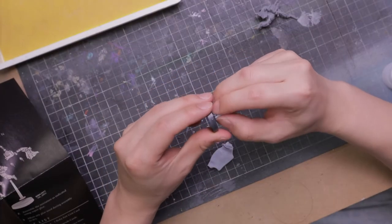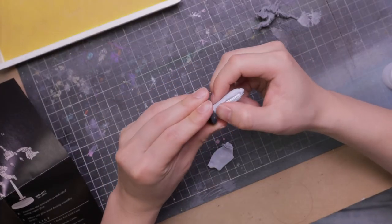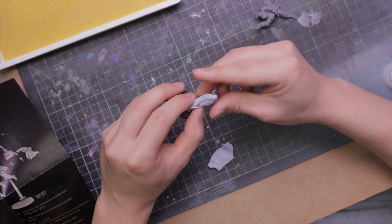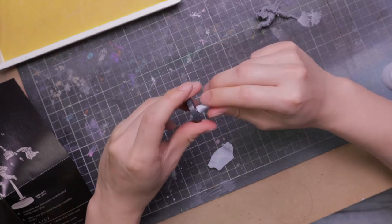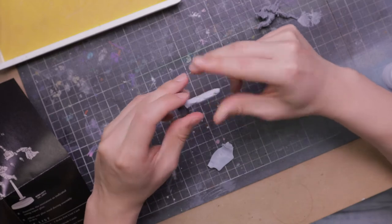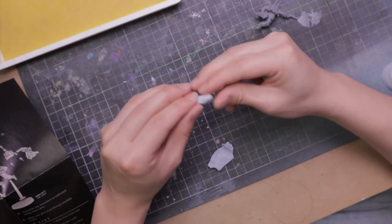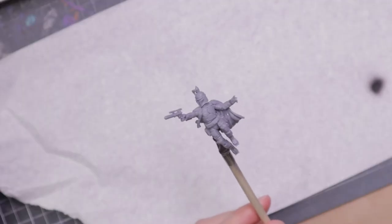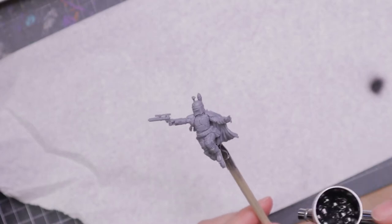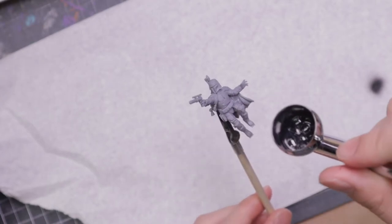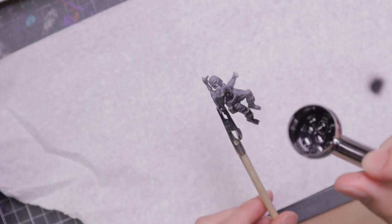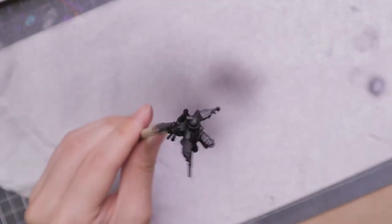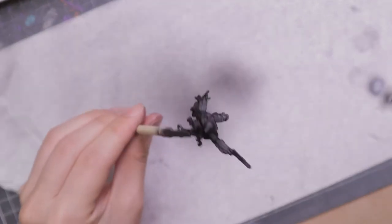I'm going to blue tack the rod to make sure it stays clear, because I'm a huge fan of clear flying bases. I'm going to prime in black first, then do white for my zenithal highlight so I can get an idea of how I want to shade him.